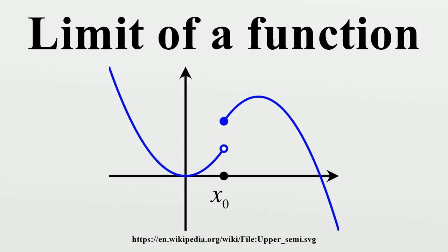If asked about the altitude of x equals p, she would then answer L. What does it mean to say that her altitude approaches L? It means that her altitude gets nearer and nearer to L except for a possible small error in accuracy. For example, suppose we set a particular accuracy goal: she must get within 10 meters of L. She reports back that indeed she can get within 10 meters of L, since when she is within 50 horizontal meters of P, her altitude is always 10 meters or less from L.